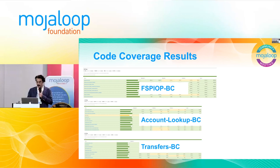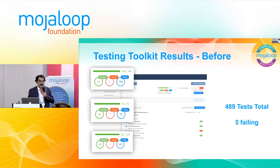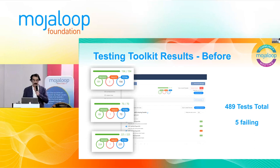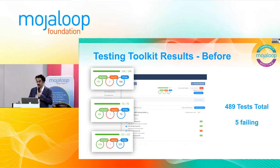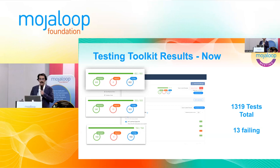These are the results from the testing toolkit. As you can see, we had not even 500 tests last PI with five failing. In this PI, we now have close to 1,300 tests. The level we are now at is 1,300 tests passing and 13 failing — a very minute percentage. If I'm not mistaken, the TTK provides around 3,000 tests, so we need to keep working so that we have coverage for the rest of it.